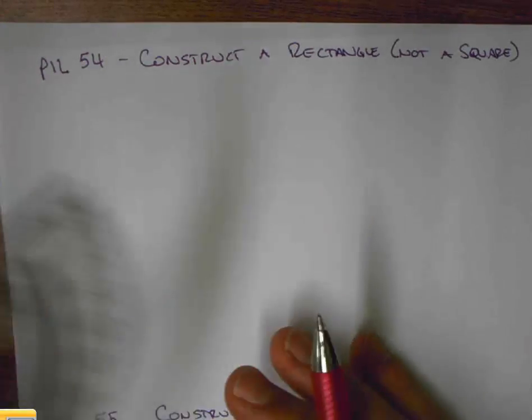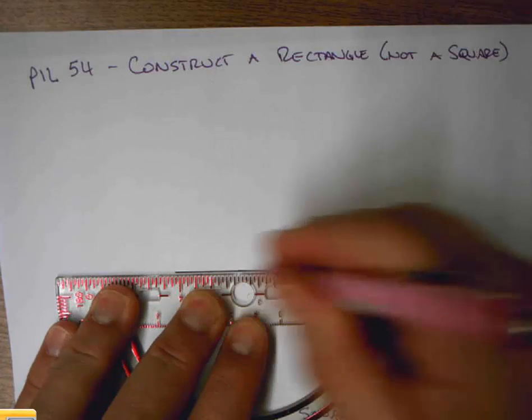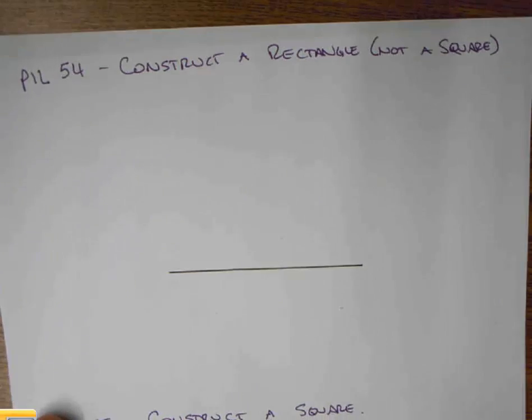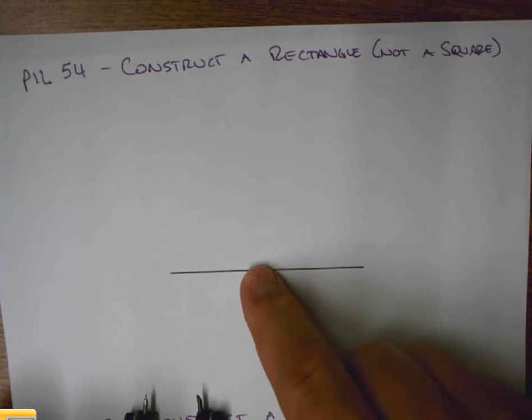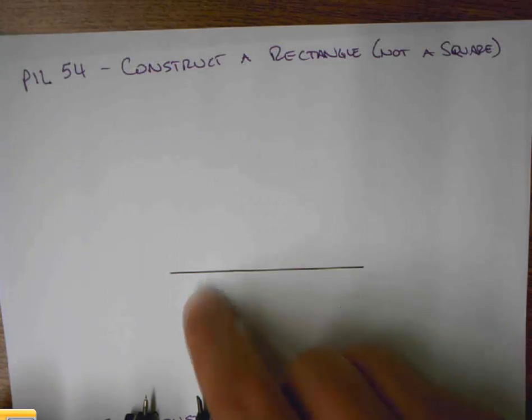So to begin with, we get one segment that is free. I'm going to pick, it doesn't really matter where, but I am going to produce a line that is perpendicular to this segment, which will give us one of our right angles.